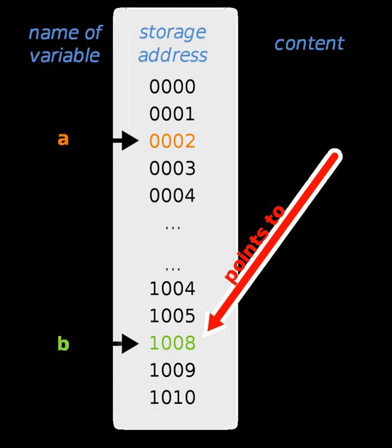Pointers can be used to pass variables by their address, allowing their value to be changed. For example, consider the following C code.